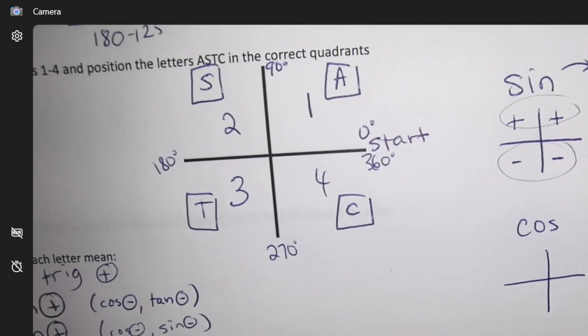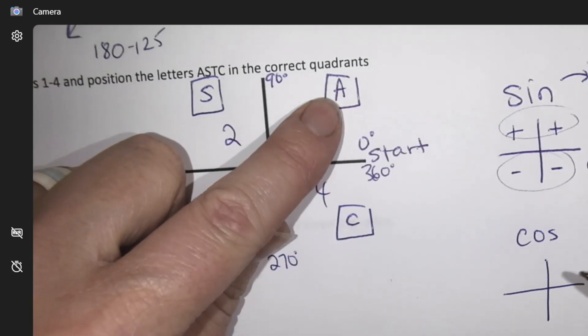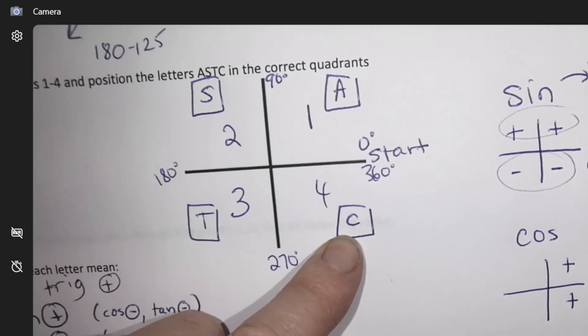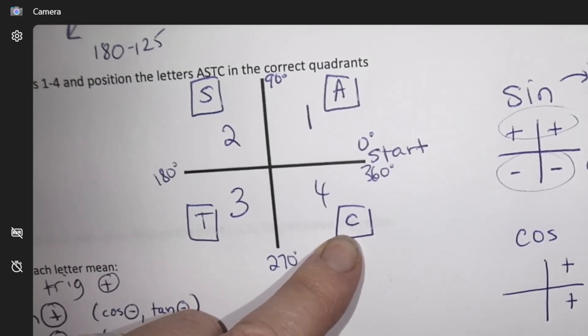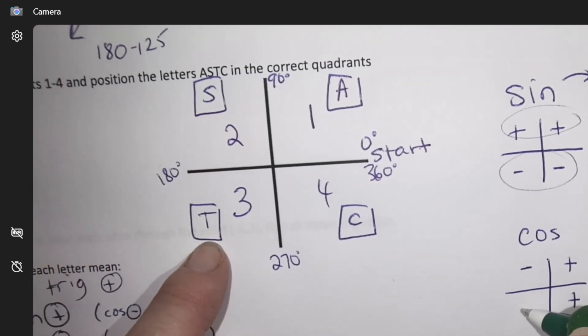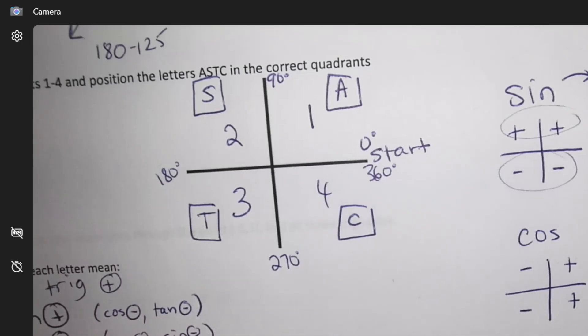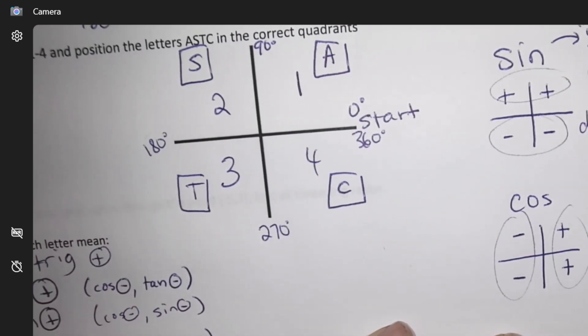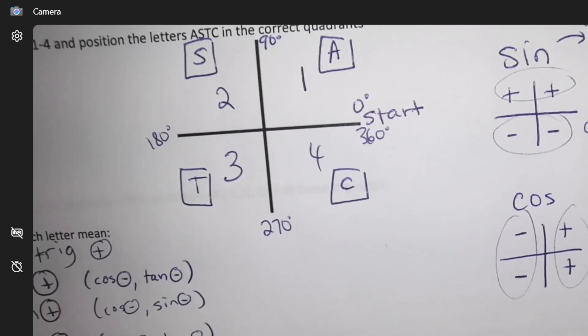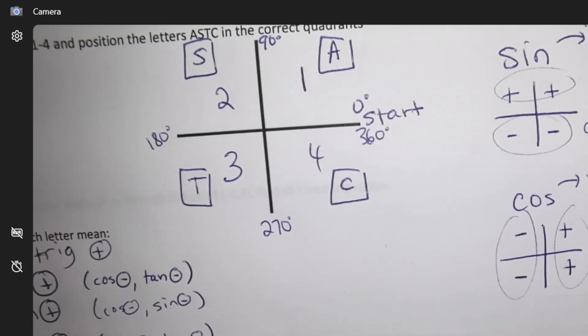So cos, where is cos positive? The A, where else is cos positive? The C, the 4. So cos is negative and cos is negative. Do you see that cos ends up splitting apart as a left and right movement? So guess what cos is going to connect to? Later on, you're going to figure out that cos is connected to something with X.